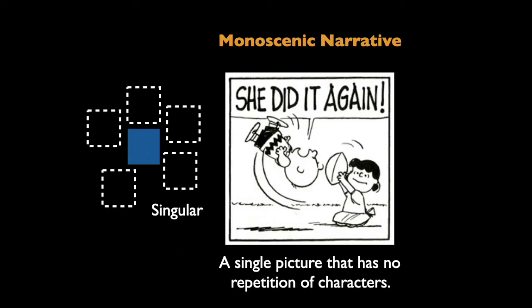We can tell this story as a single picture — this is the monocenic narrative, where you have one picture and one picture alone. If I was going to try to tell the story in one picture, I would just show this one here. People familiar with the story could see this and say, 'That's the scene when Lucy is pulling the ball away and Charlie Brown is saying she did it again.' So this one picture is made to stand in for the whole story. You can't really tell the whole story in one picture, but you can indicate the story so that someone who already knows it can get it.